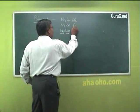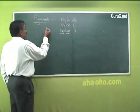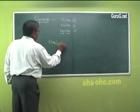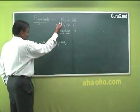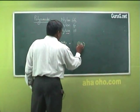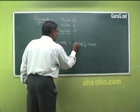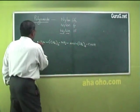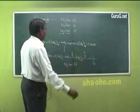The 6-6 in Nylon-66 indicates the number of carbon atoms present in each monomer. To prepare nylon, we need a diamine — hexamethylenediamine, which carries 6 carbon atoms — and adipic acid, which again has 6 carbon atoms inclusive of the carboxyl carbons. This is a condensation polymerization, giving Nylon-66.